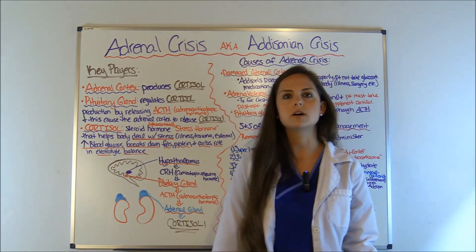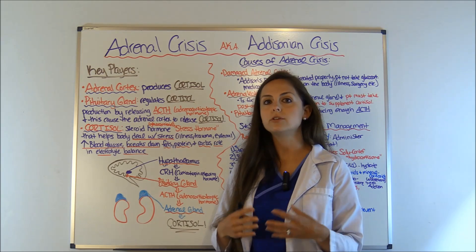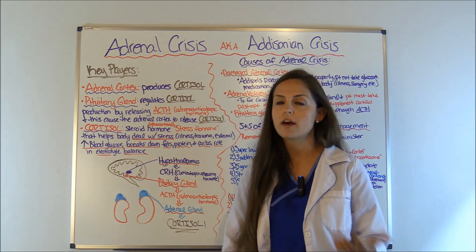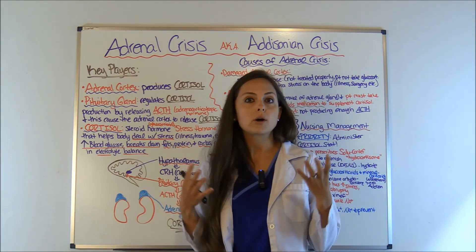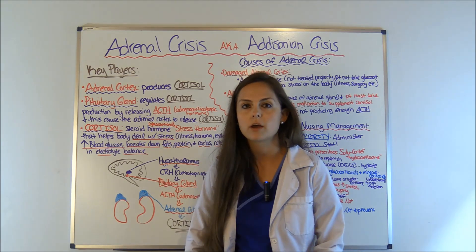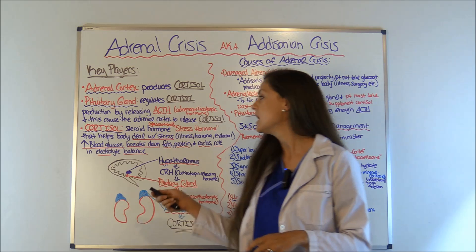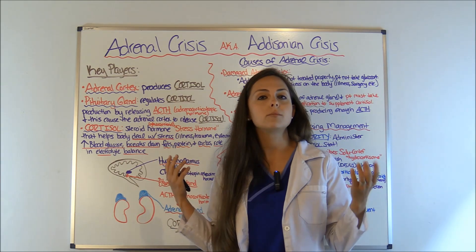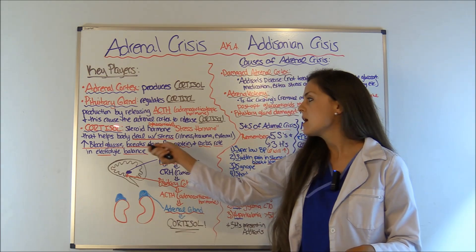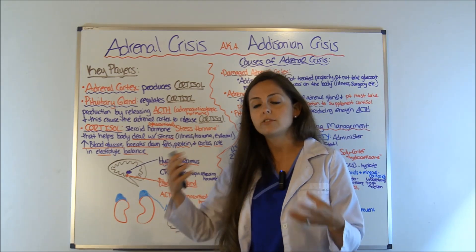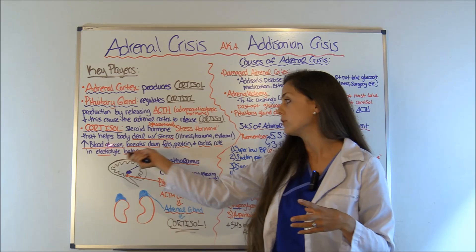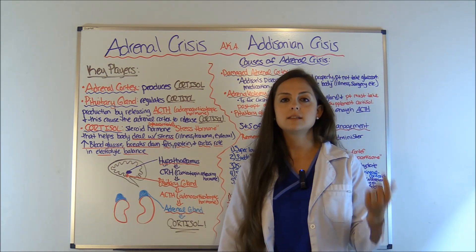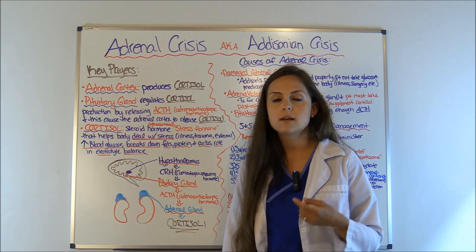Cortisol is a steroid hormone, specifically a glucocorticoid. To help you remember what cortisol is, think of it as a stress hormone — it helps your body deal with stress. Anytime your body is undergoing illness, trauma, or external stress, your body releases cortisol. What cortisol does is it metabolizes glucose, which increases your blood glucose. It helps break down fats, proteins, and carbs, and it plays a role in regulating electrolytes, specifically sodium and potassium.